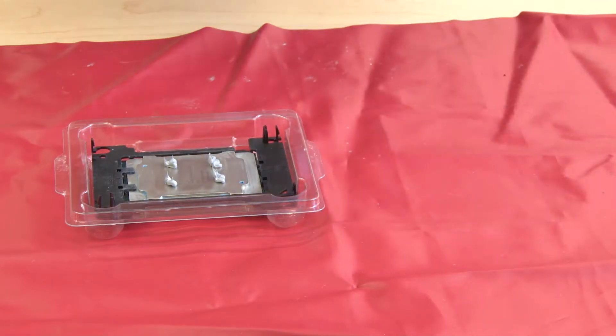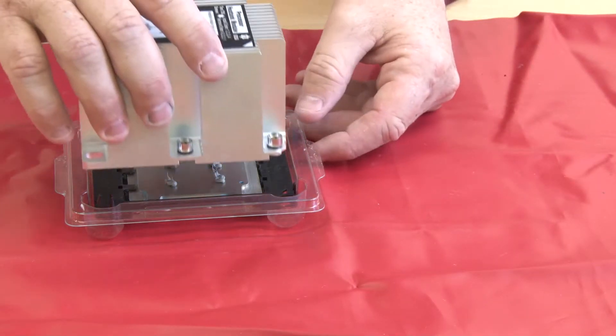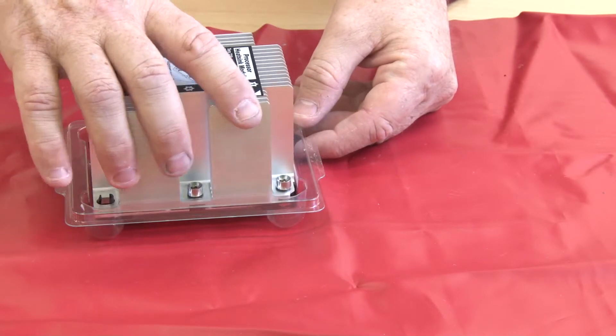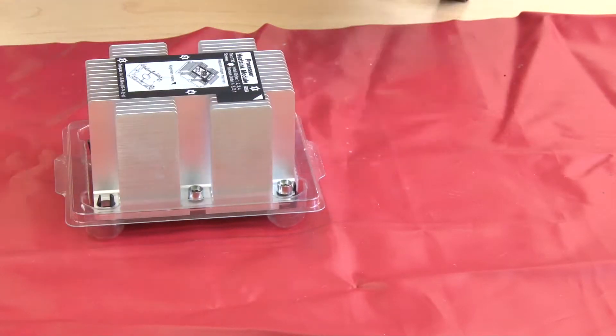Align the arrow on the heat sink with the arrow on the CPU retainer. Carefully lower the heat sink onto the CPU retainer clips and press down gently until the clips are engaged and the CPU is secure.